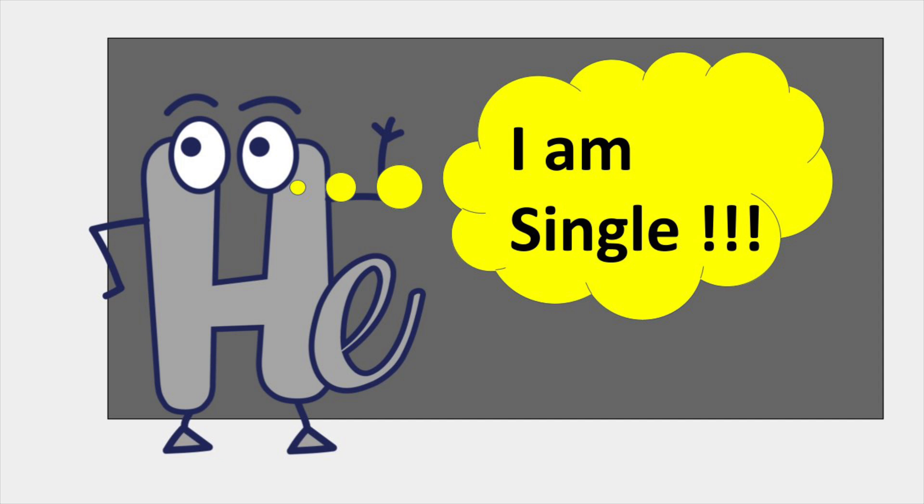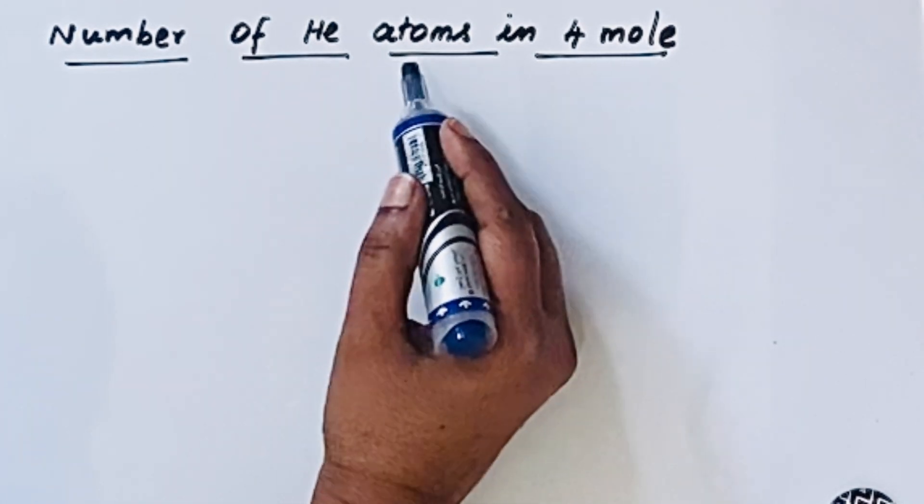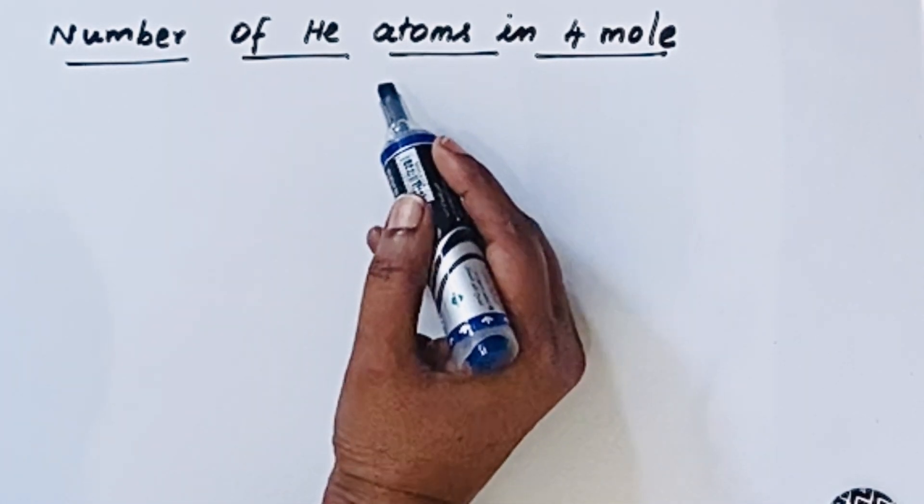Helium is a monoatomic element, that means its atomicity is one. Whenever number of atoms, that means number of particles, are asked, we should use the formula for finding the moles.